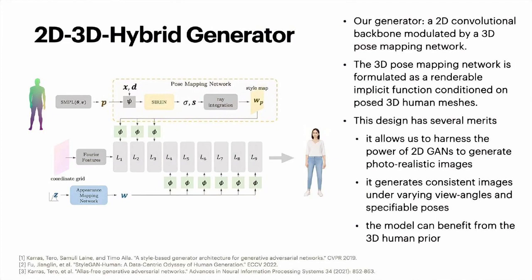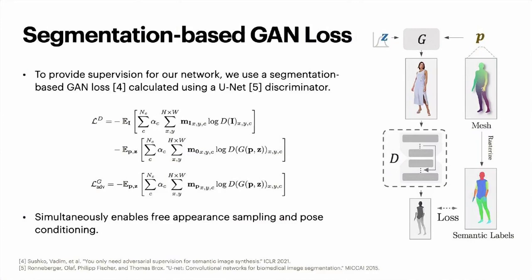To provide supervision for our network, we use a segmentation-based GAN loss calculated using a U-Net discriminator. This simultaneously enables free-appearance sampling and pose conditioning.